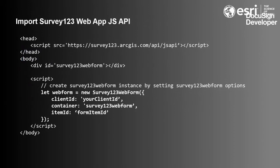Looking at a hello world equivalent: in the HTML, the script in the head section loads the API from the Survey123 website. In the body, you have a div that serves as the container for the web form. The script in the body runs on load — the page load initiates the Survey123 form using the client ID, sets the container for the web form, and also sets the web form item ID. It's just a quick breakdown of how we set it up in the head, the body, and the actual script to initiate the web form.